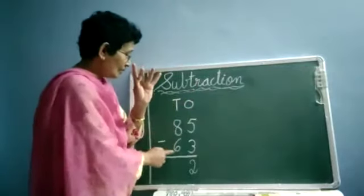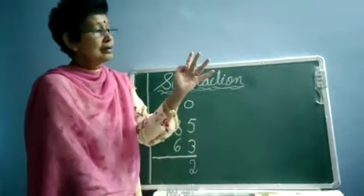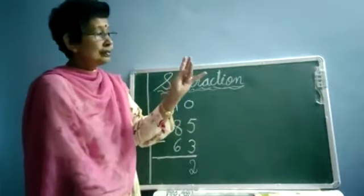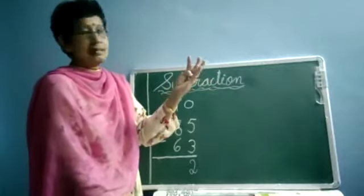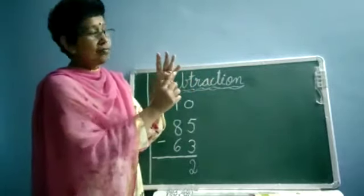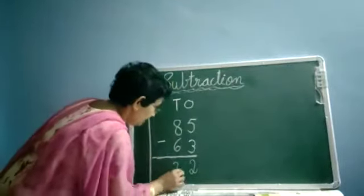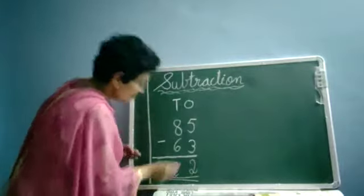From this 8, we have to cut down how many? 6. So we will start from here: 1, 2, 3, 4, 5, 6. So keep your finger again here. Now how many are left out? 1 and 2. So 8 minus 6 is, answer is 2. Then underline your answer.